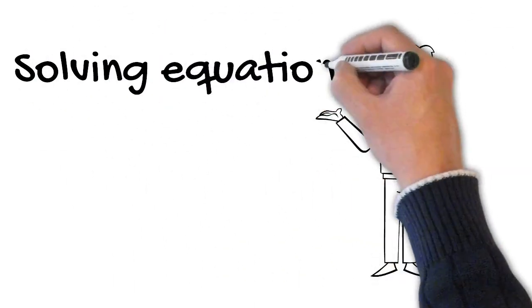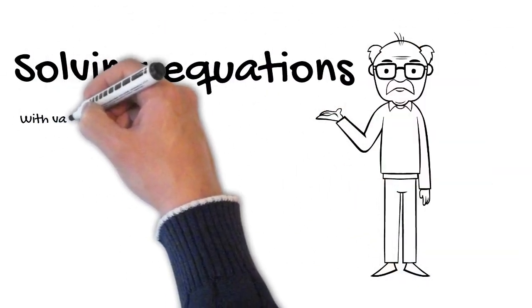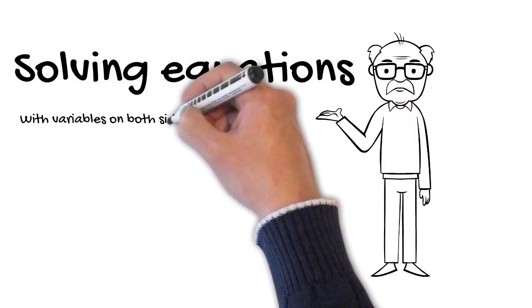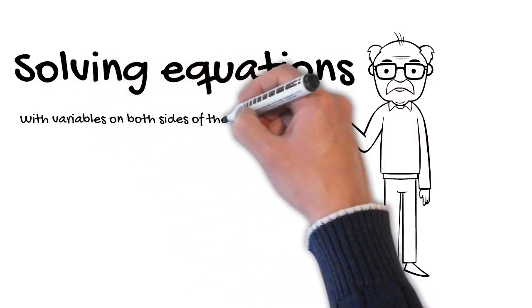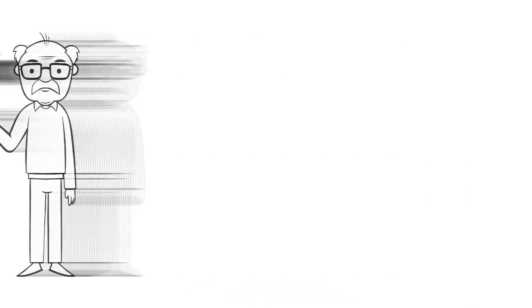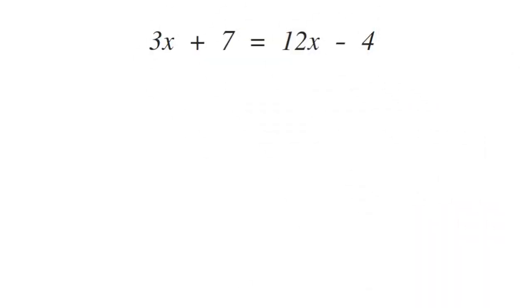We're going to talk about solving equations with variables on both sides of the equation. Let's start with a relatively simple problem: 3x plus 7 equals 12x minus 4.